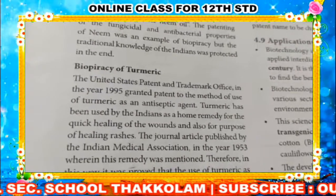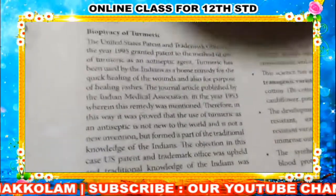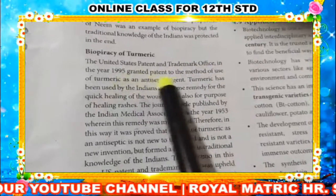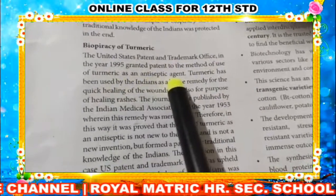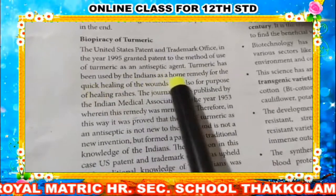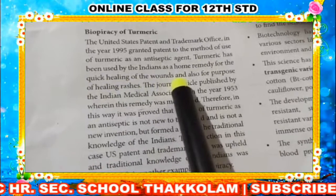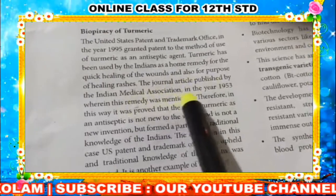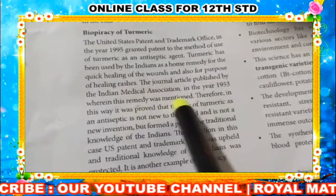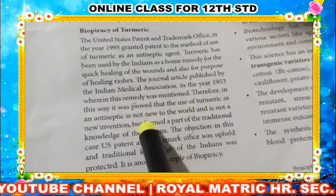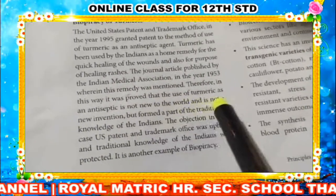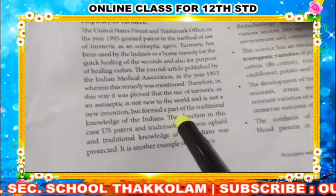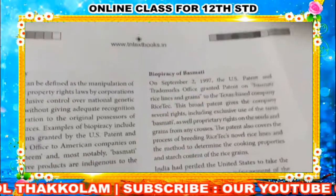Turmeric is an antiseptic used in India against bacterial and fungal infections. A patent was obtained in 1995 for the method of use of turmeric as an antiseptic agent. Turmeric has been used by Indians as a home remedy for quick healing of wounds and rashes. The Indian Medical Association provided journal articles proving this remedy was documented earlier, showing that use of turmeric is not a new invention but an earlier method used by Indians.